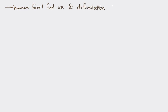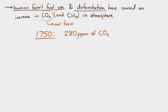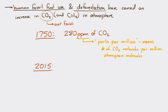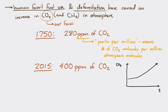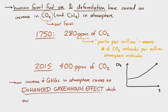However, human fossil fuel use and deforestation have both caused an increase in carbon dioxide and methane in the atmosphere. In 1750, there were about 280 parts per million of CO₂ in the atmosphere. As of 2015, the average was about 400 ppm, and over time this has been steadily increasing. An increase in greenhouse gases causes an enhanced greenhouse effect, which in turn increases the average temperature of the Earth.